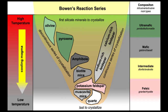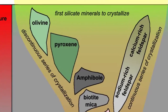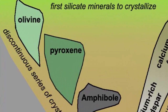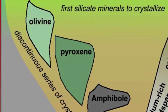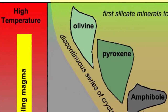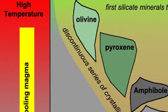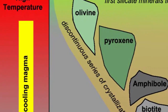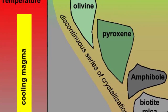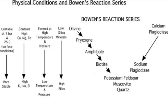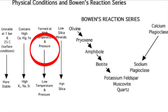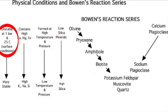Welcome back, Mineralogy fans! It is time to meet the discontinuous mafic minerals here at the top of Bowen's reaction series. When a general melt is allowed to cool and crystallize, the first minerals on the discontinuous side to come out are olivine, then pyroxene, then amphibole. In general, minerals at the top of Bowen's reaction series crystallize from a melt first, melt from a solid last, and are less chemically stable at the surface. Olivine definitely fits this trend.